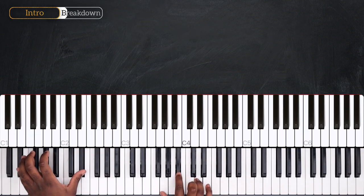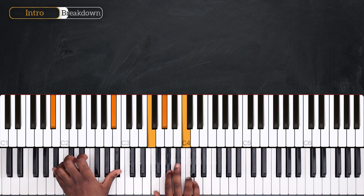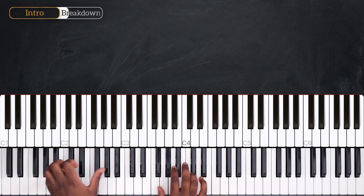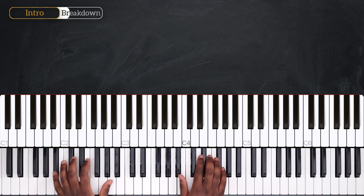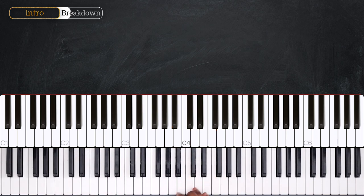So once again, that's Eb major 7, F minor over Bb, F minor 7, and then Bb major. Three, four.